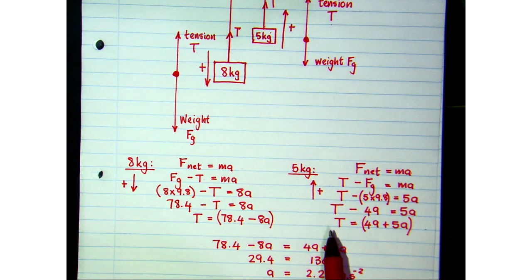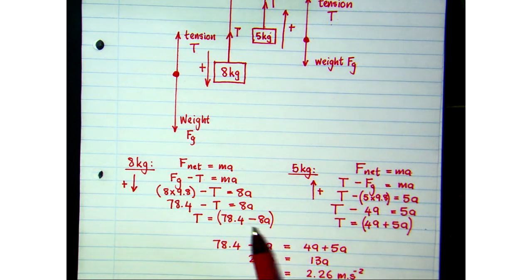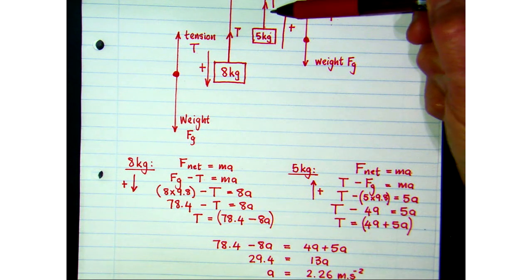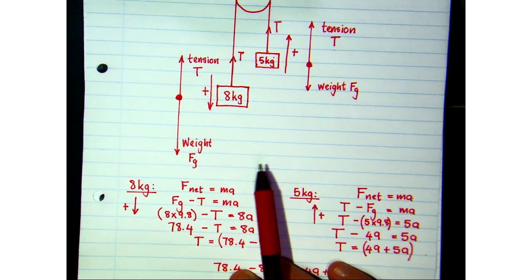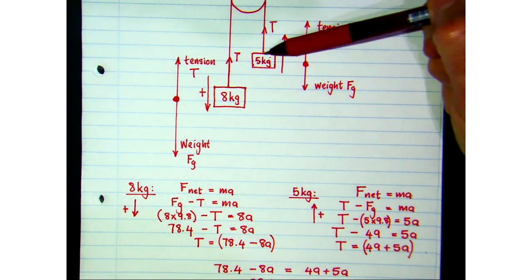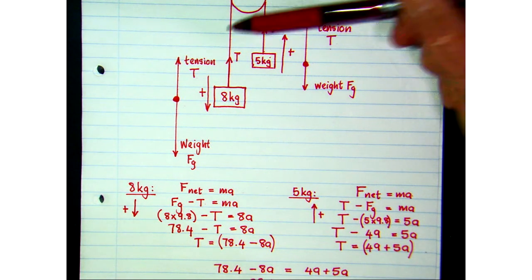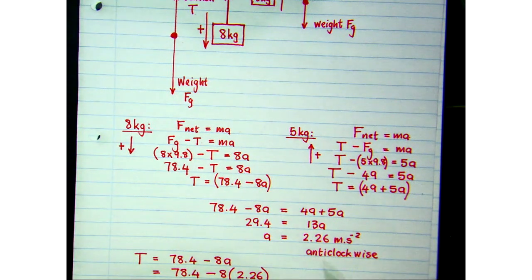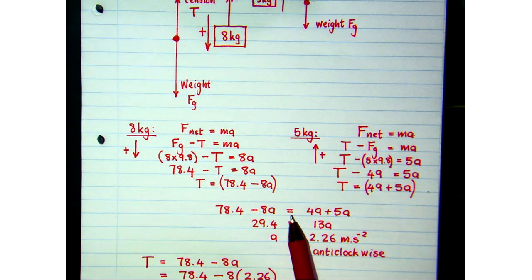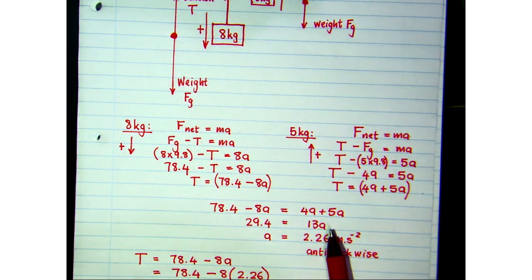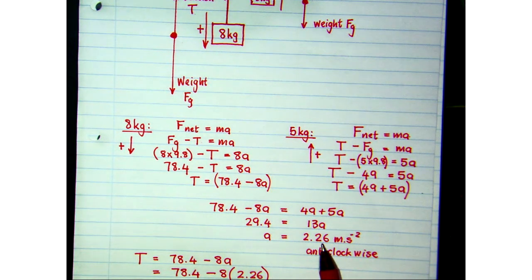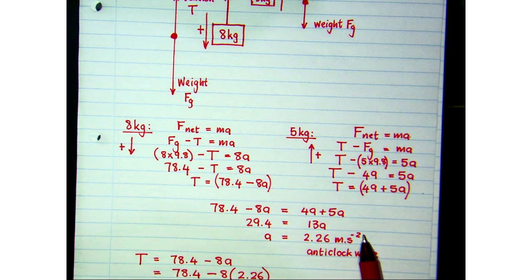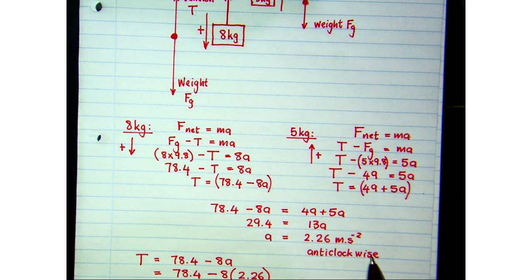To eliminate T, I make these two equal to each other. Well, we know they are equal to each other. The tension forces, it's the same string. So, the tension in this part of the string is the same as the tension in that part of the string. So, we make them equal to each other. And, we've eliminated T. And, if we do the maths right, we should get an acceleration of 2.26 meters per second squared. And, this system will accelerate anti-clockwise around that pulley.